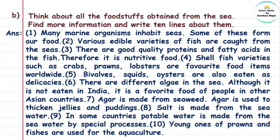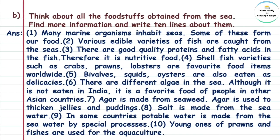Crabs, prawns, and lobsters are a favorite food all over the world. Bivalves, squids, and oysters are also eaten as delicious food. There are different algae in the sea — algae means shewaar. While algae may not be commonly eaten in India, people in other countries enjoy eating them.